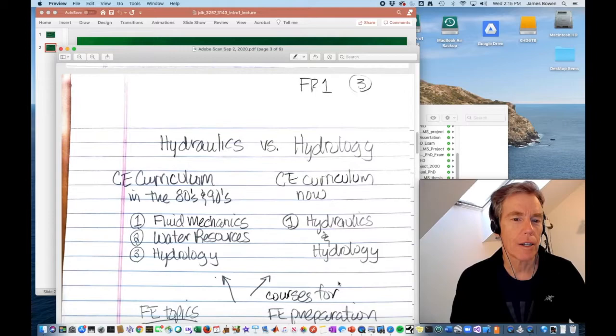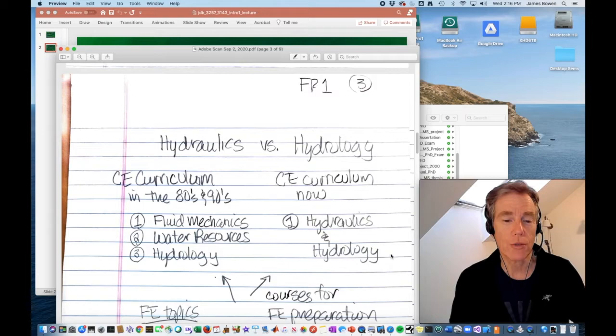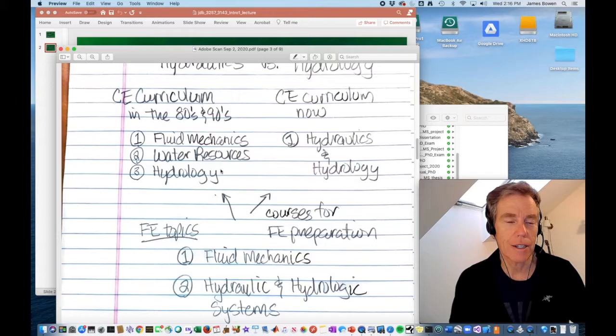Next, let's talk about the two components of this class, hydraulics versus hydrology. Back in the 80s, when I was taking these courses, we actually had in a civil engineering curriculum three classes that you would take in this area. You would take a fluid mechanics course first. Sometimes that was taught in the mechanical engineering department, sometimes taught in civil. And then, in addition to that class, you'd take a water resources class and a hydrology class. So, a total of three classes. Civil engineering curriculums now typically have just a single course. This one, hydraulics and hydrology.